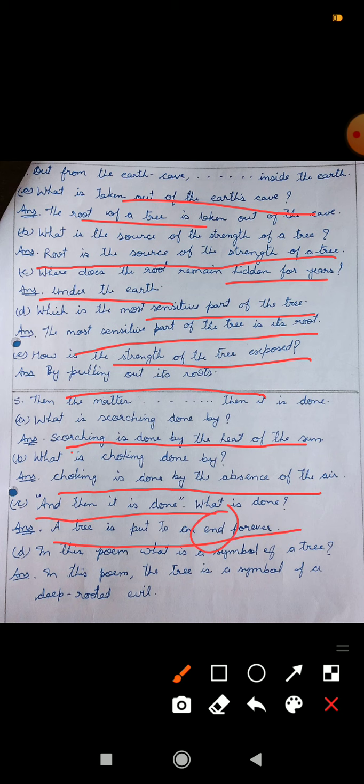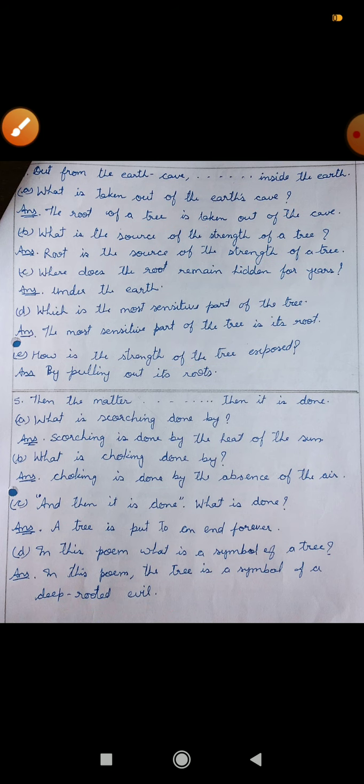In this poem, what is the symbol of a tree? Ye peed jo hai, tree jo hai, wo kis cheez ko symbolize kar raha hai? In this poem, the tree is a symbol of a deep-rooted evil. Bohut geheri jakad pakad banaye vay, ek burai ko represent kar raha hai yaan par tree. So this is all for today's session. We will meet next time with some new topic. Till then, goodbye and take care.